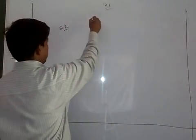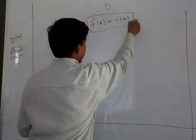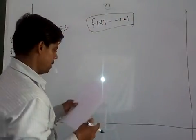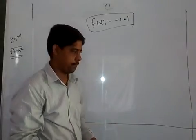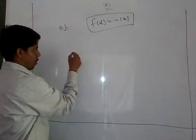This is the graph. f(x) is equal to minus mod x. We have to find the domain and range. So what is the domain? Are all values of real numbers allowed or not?